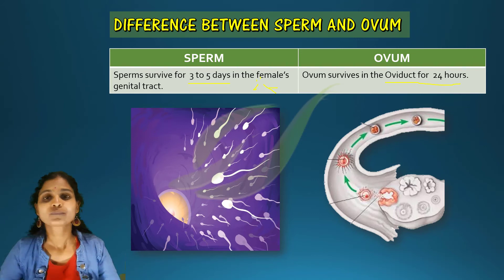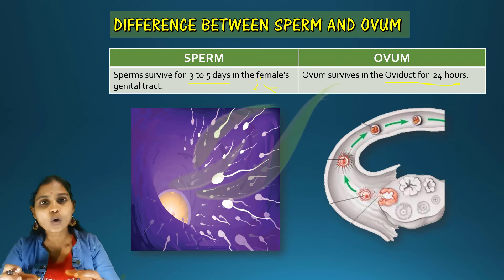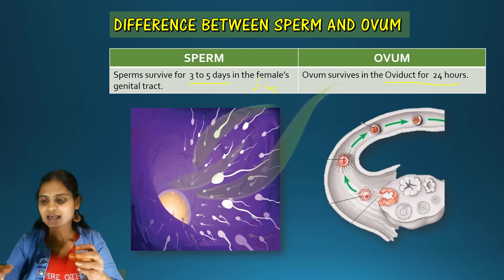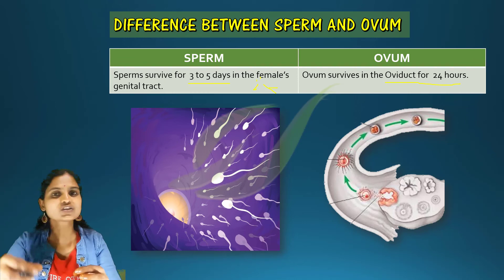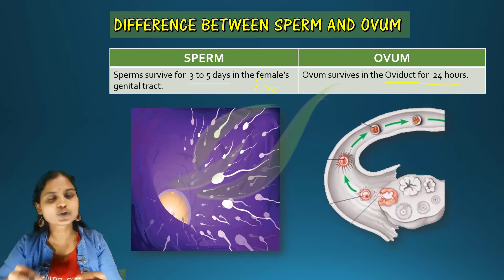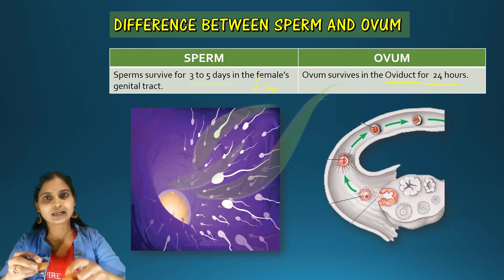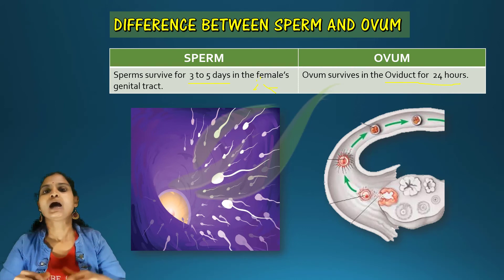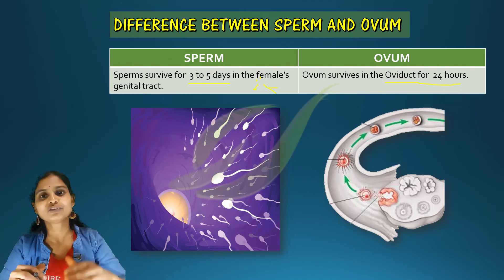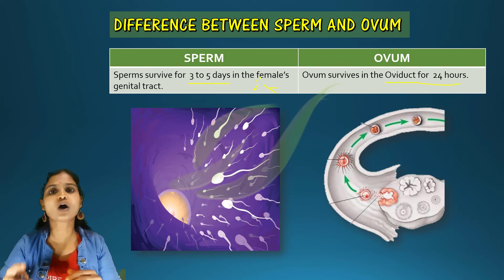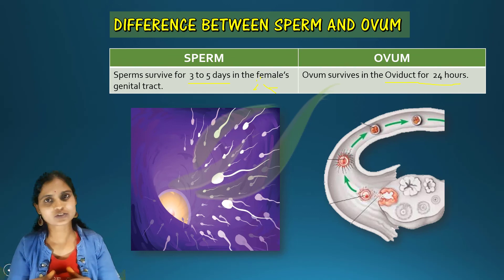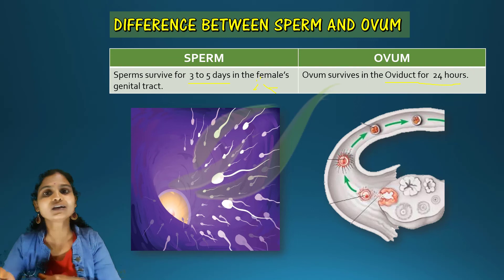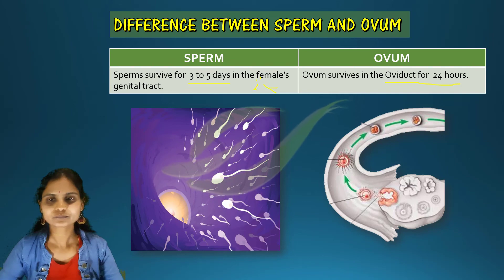Fertilization takes place only when sperm and ovum simultaneously come into the fallopian tube and fuse. For the first six hours after ovulation, the sperm is most active and fertilization can occur most easily. As time increases, the fertilizing capability of the sperm decreases, and since the ovum survives only one day, fertilization must occur within that window.